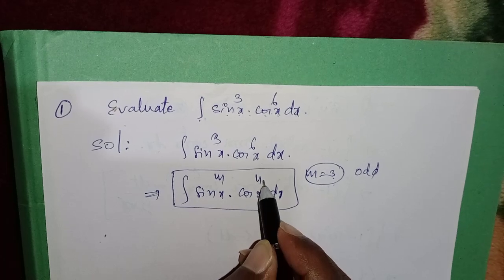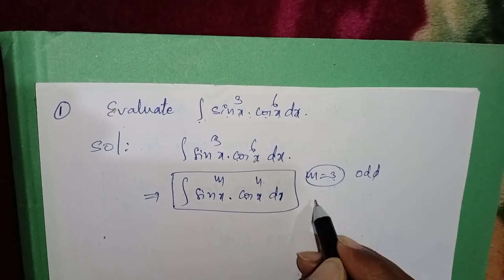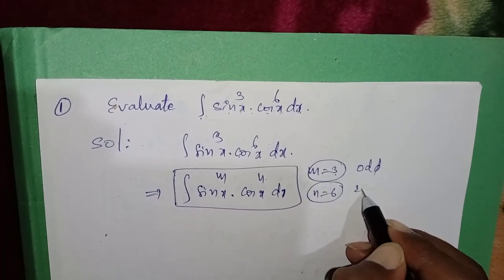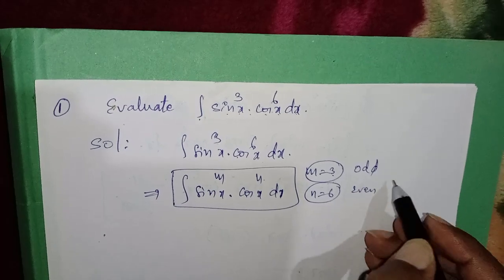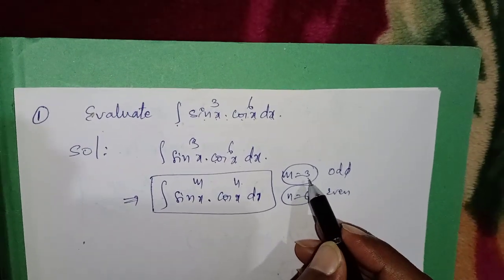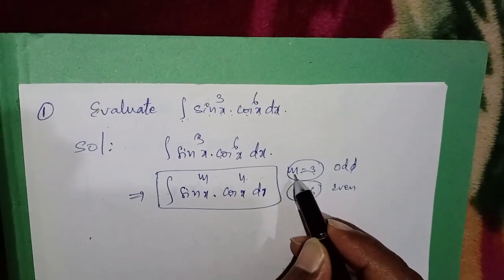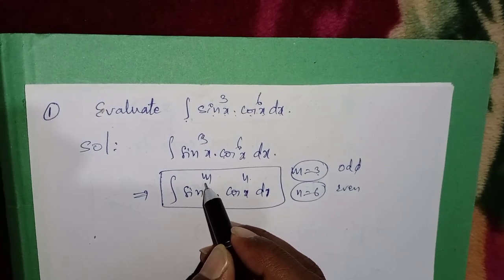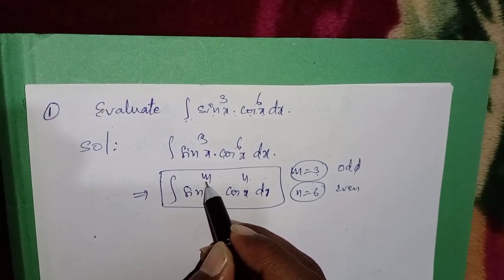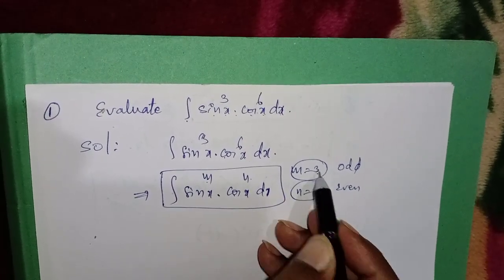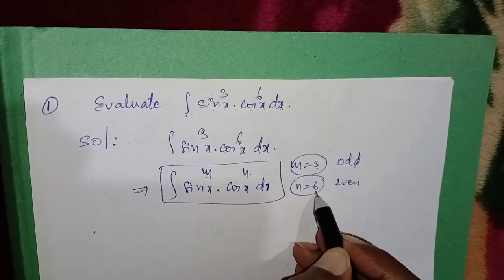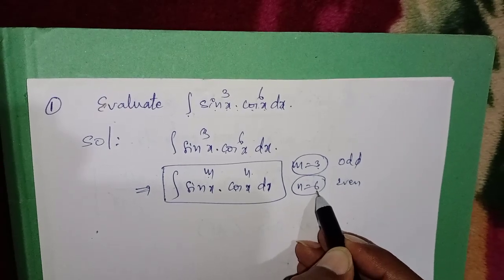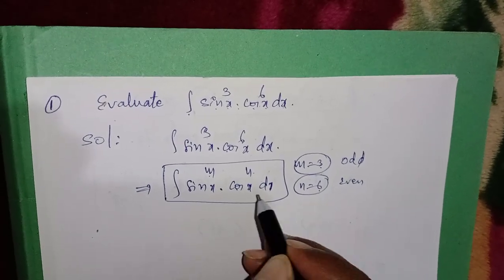Next, for cos x, the power value is n, and here it is 6, so n = 6, which is an even number. We observe that one function's exponent is odd and the other is even.